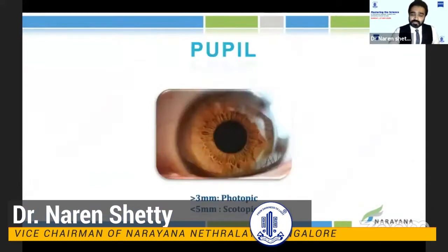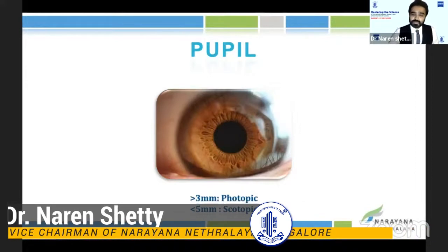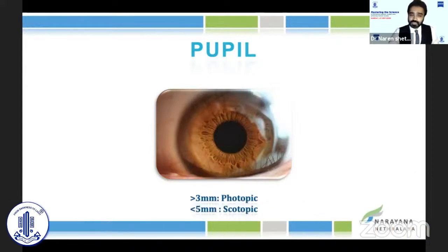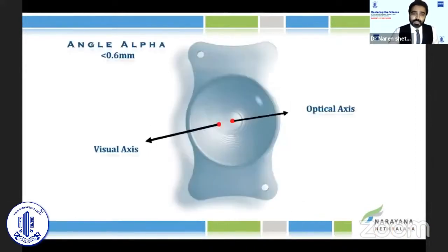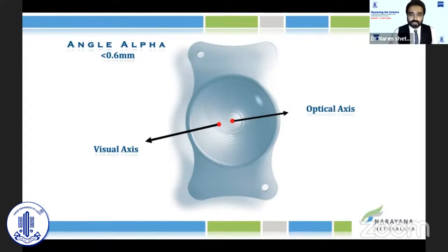In terms of pupil, this is something that we always miss out. Look at the pupil size. Make sure the pupil size is more than three millimeters and less than five millimeters for photopic and scotopic pupil. Angle alpha is also one of the important factors. It is the distance between the visual axis and the limbal center, and this value should be less than 0.6.